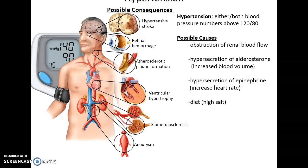Hypertension is high blood pressure — above 120/80. Either or both numbers can be elevated. It causes all kinds of problems and can lead to death, so it is important to treat it.